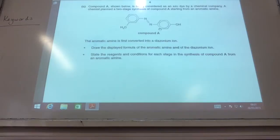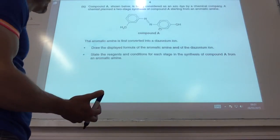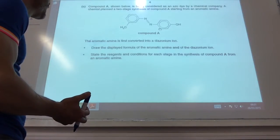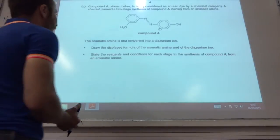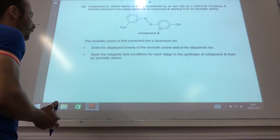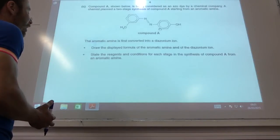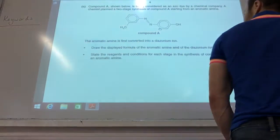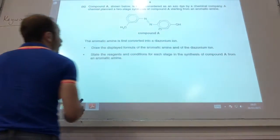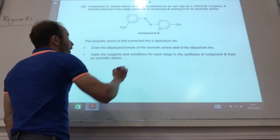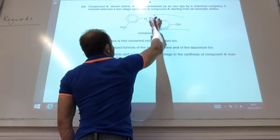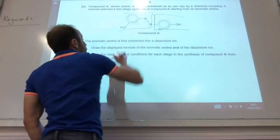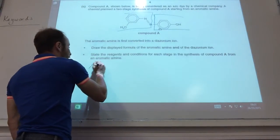Okay, so moving on, compound A shown below is an azodye. This is synthesized from an aromatic amine. Draw the displayed form of the aromatic amine and the diazonium ion. So first of all, I need to do the display. That is going to be where the phenol has come, and this part of the molecule has come from my aromatic amine. If I start off with that, the nitrogen is going to be where that nitrogen is there.